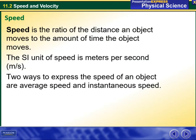Speed is the ratio of the distance an object moves to the amount of time the object moves. The SI unit of speed is meters per second (m/s). Two ways to express the speed of an object are average speed and instantaneous speed.